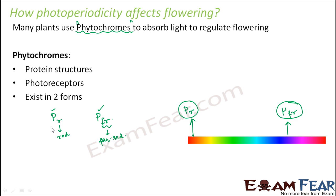These two forms are interconvertible — Pr can be converted into Pfr, and Pfr gets converted back to Pr. Now, we understood that phytochromes are protein structures that absorb light and exist in two forms, Pr and Pfr. But how does this affect flowering? Let us try to understand that.